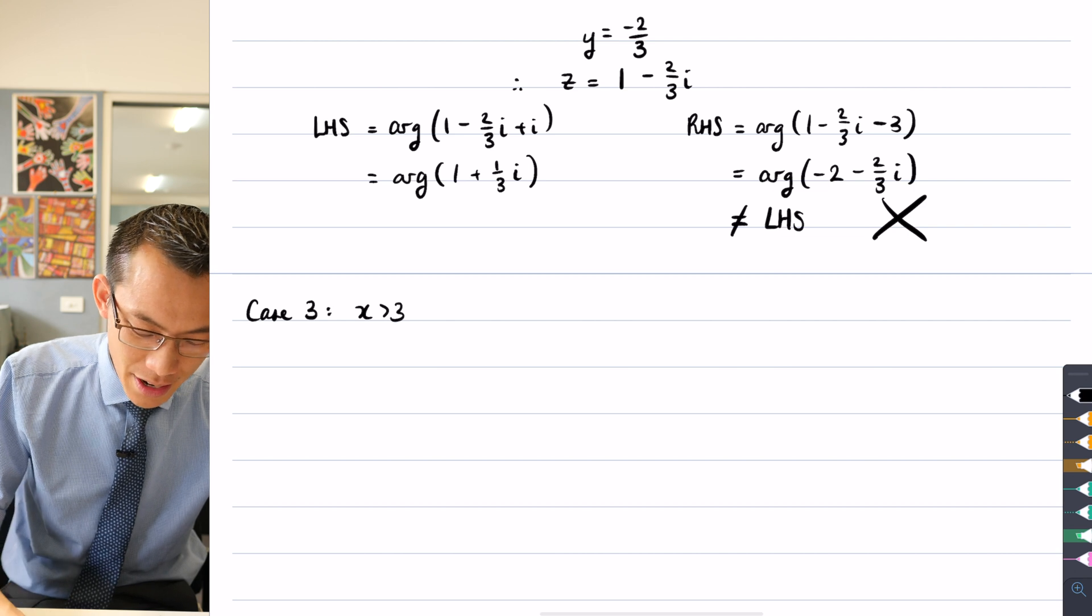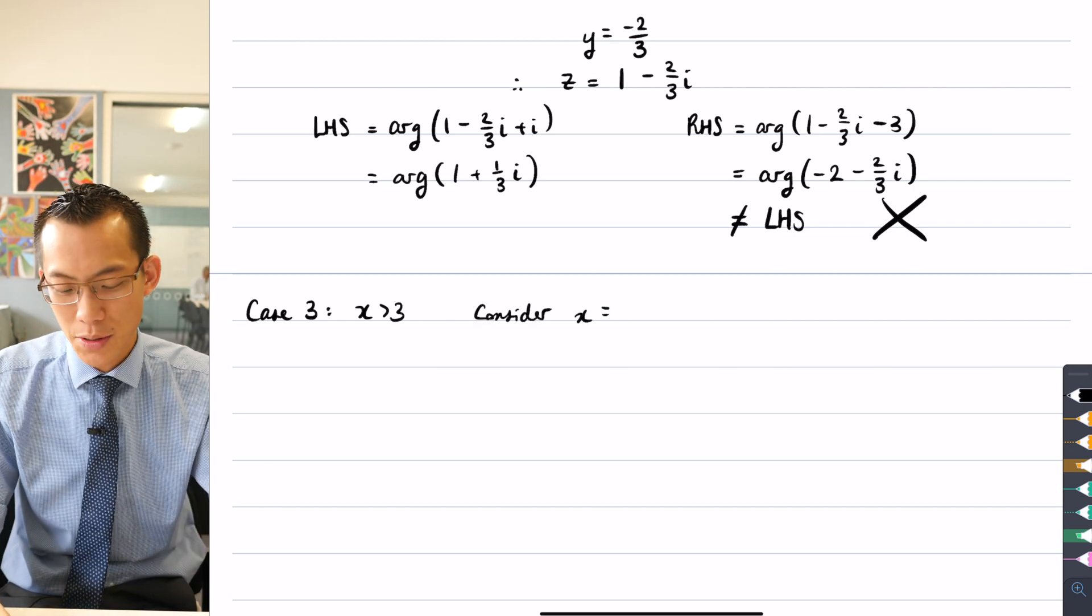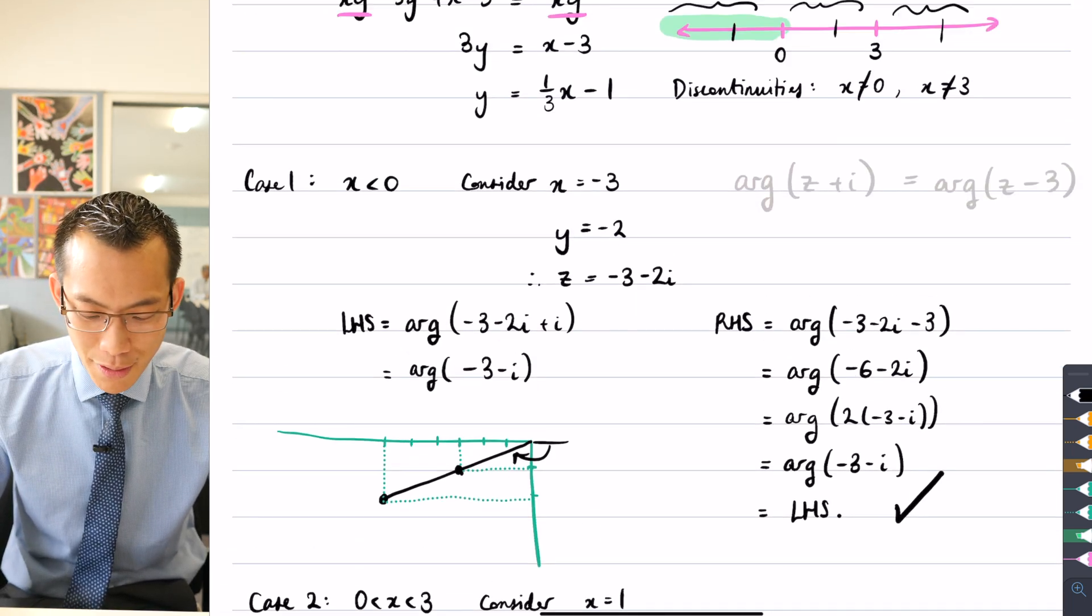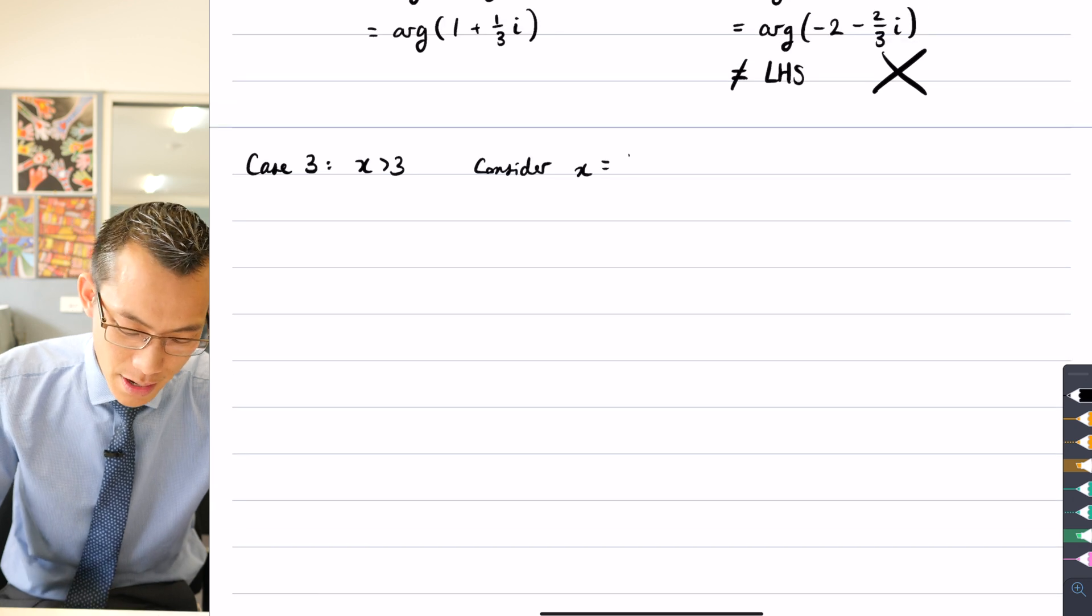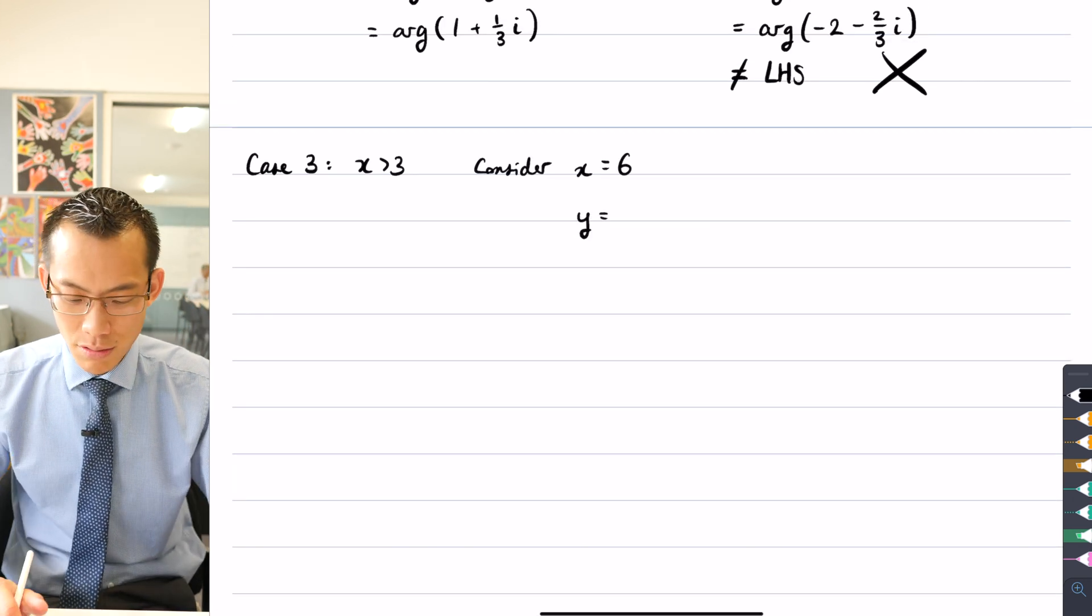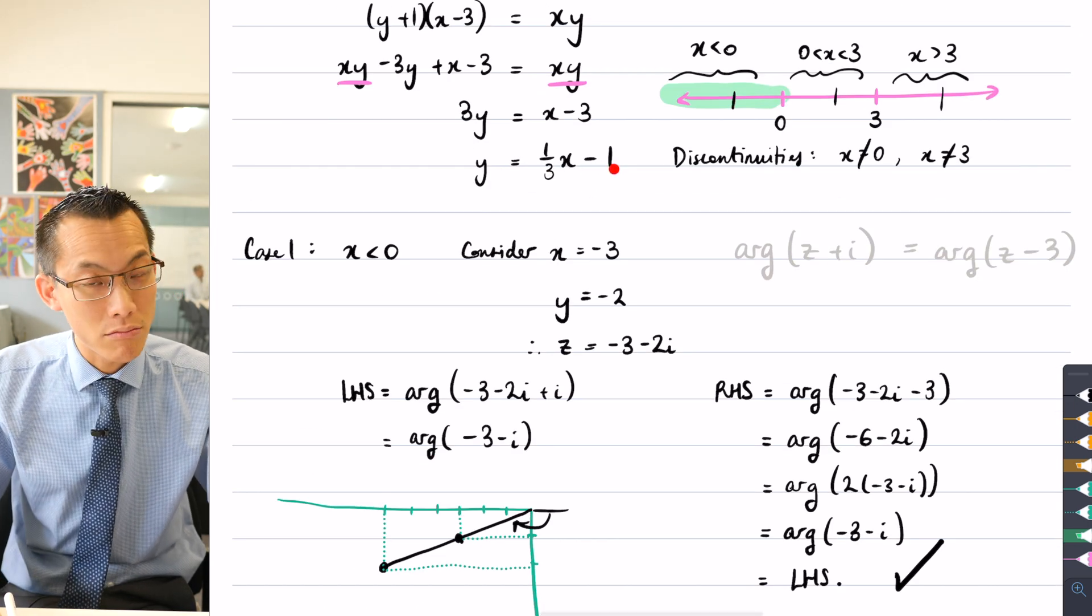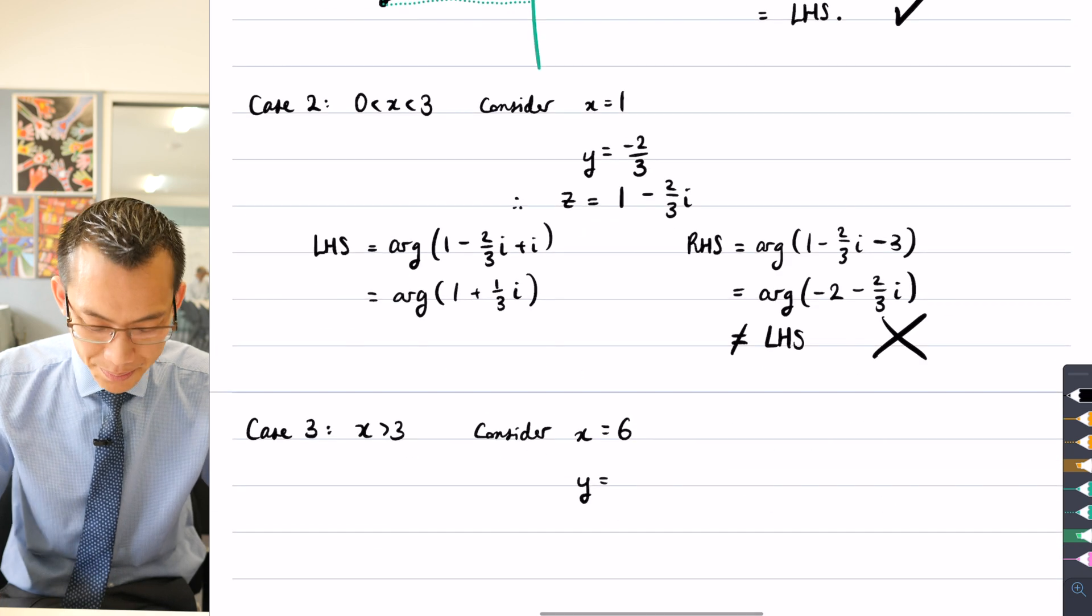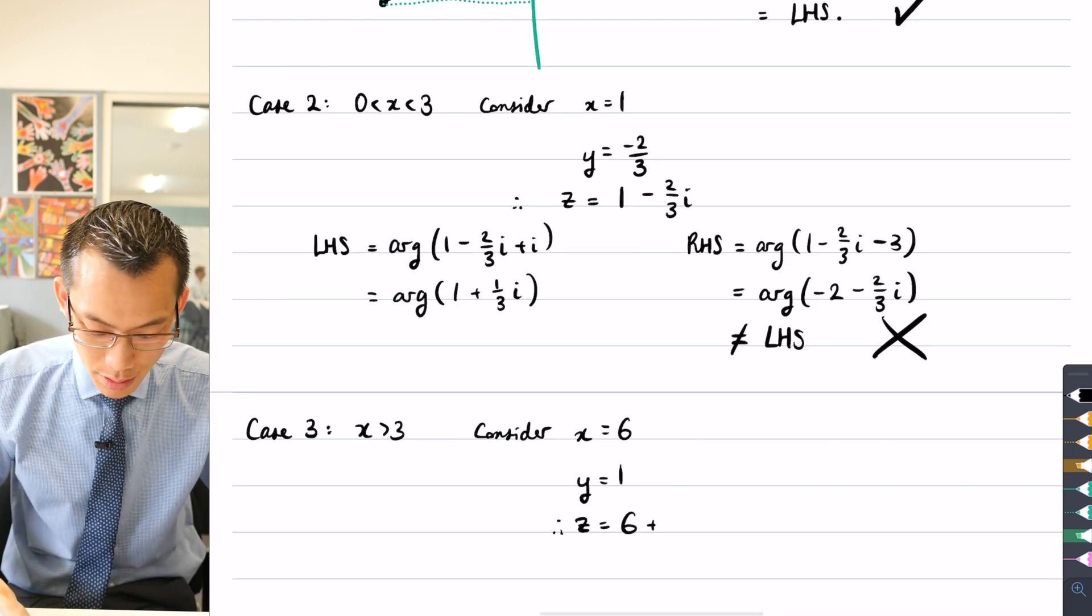This is for x is greater than three. So again, we are choosing a value of x that's just going to be convenient to us. I want multiples of three because they will just cancel with my fractions here. So I'm going to choose six. If x equals six, then y is equal to a third of six, which is two, take away two, take away one, which is one. So that's not too bad. Therefore, the z that I get with that is just six plus i.